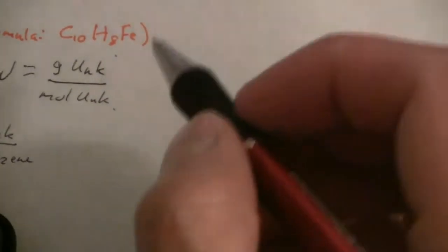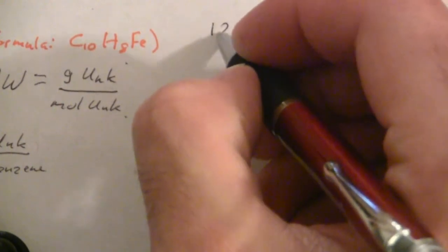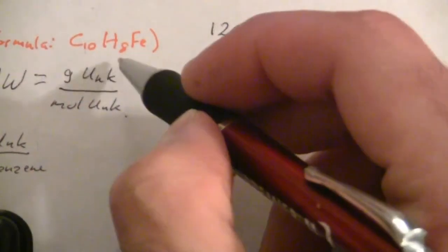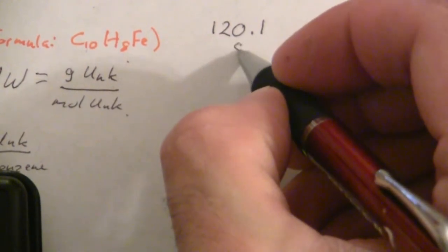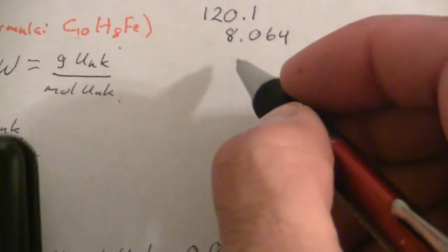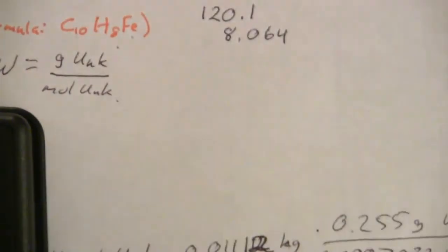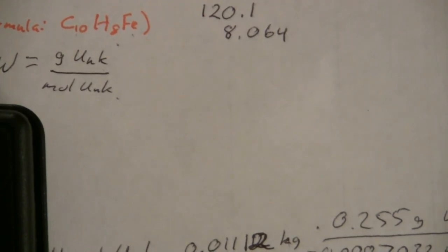For my 10 carbons I'll have 120.1, my 8 hydrogens will be 8.064, and then the iron, if I have to look that one up, it's 55.845.